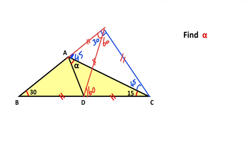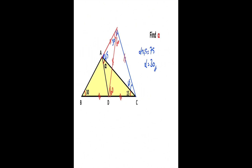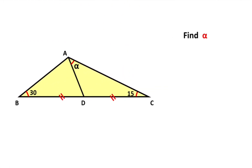It means alpha plus 45 degrees must equal 75 degrees, so alpha is going to be 30 degrees. That was the first method. Now we will calculate the value of alpha using the second method.